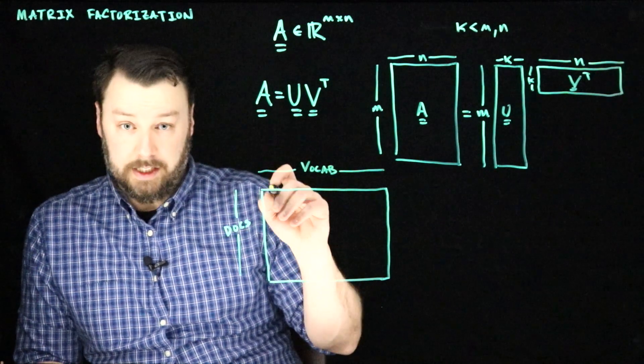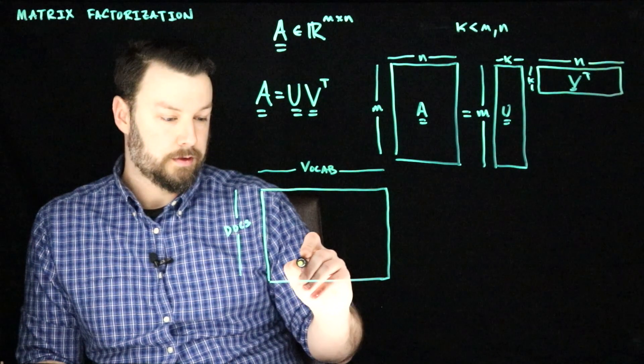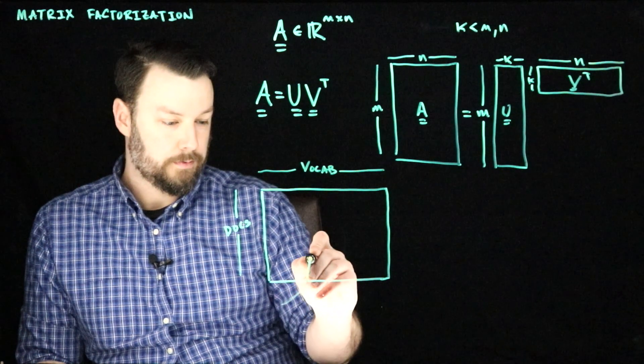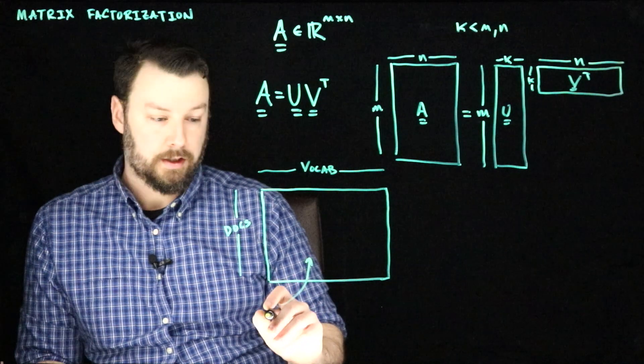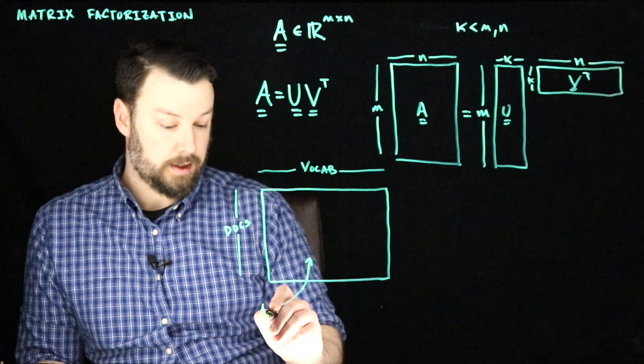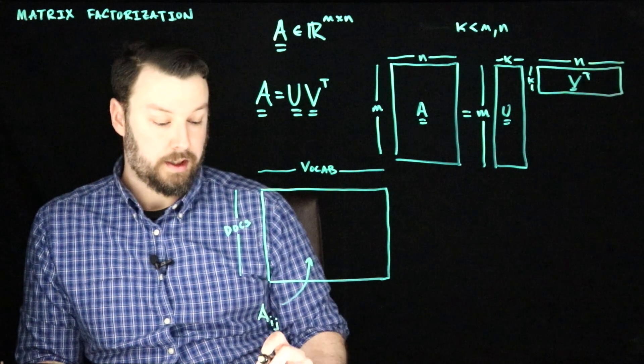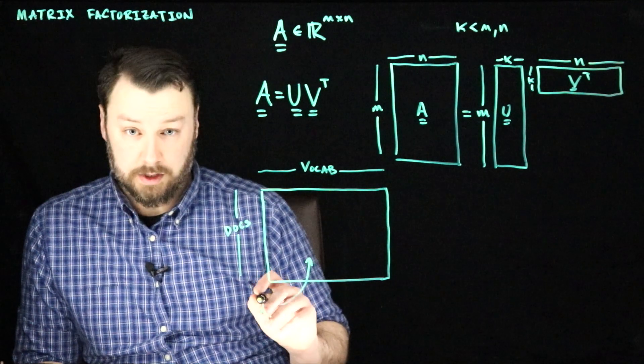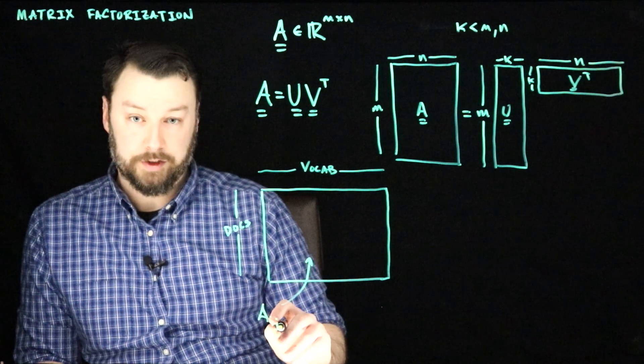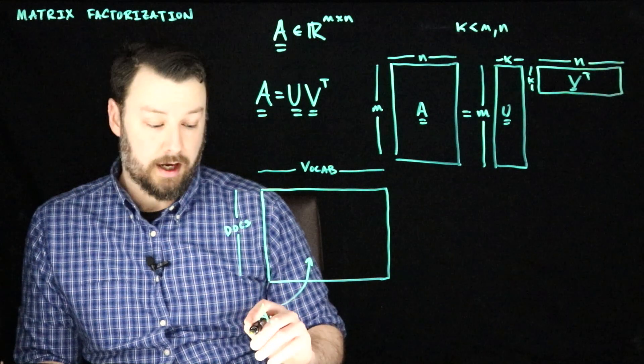So any given entry in this, if we looked at the ijth entry, then this aij is going to be the number of times the word with index j appeared in the document with index i.